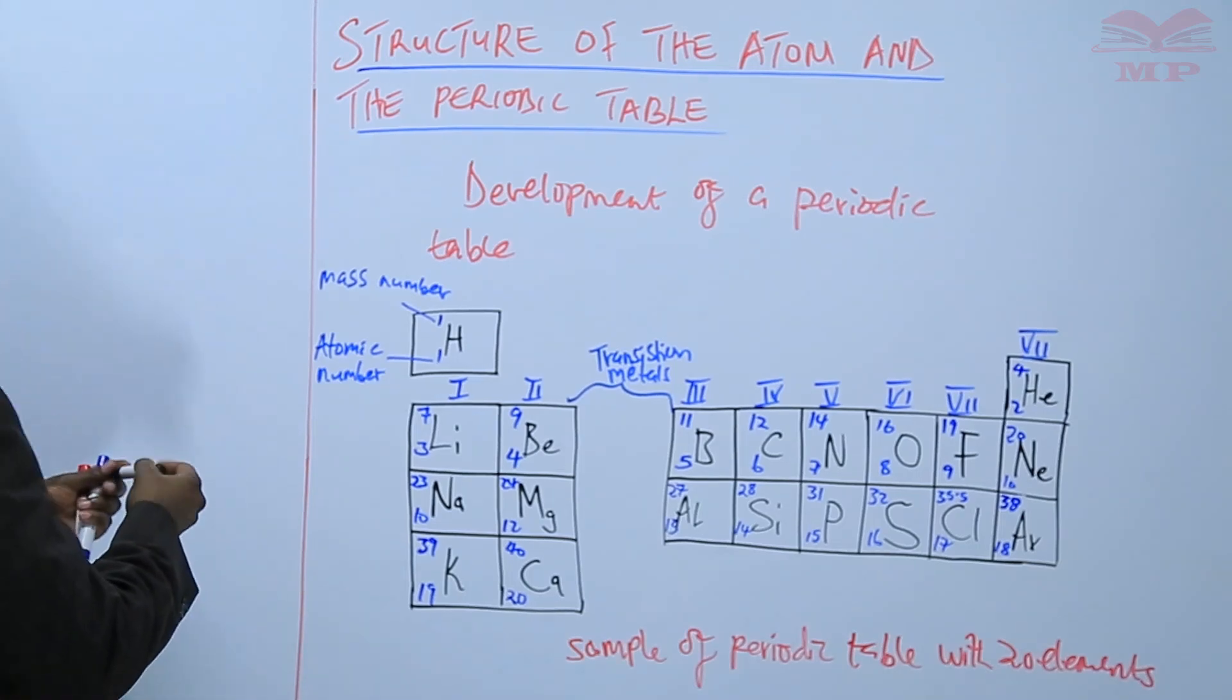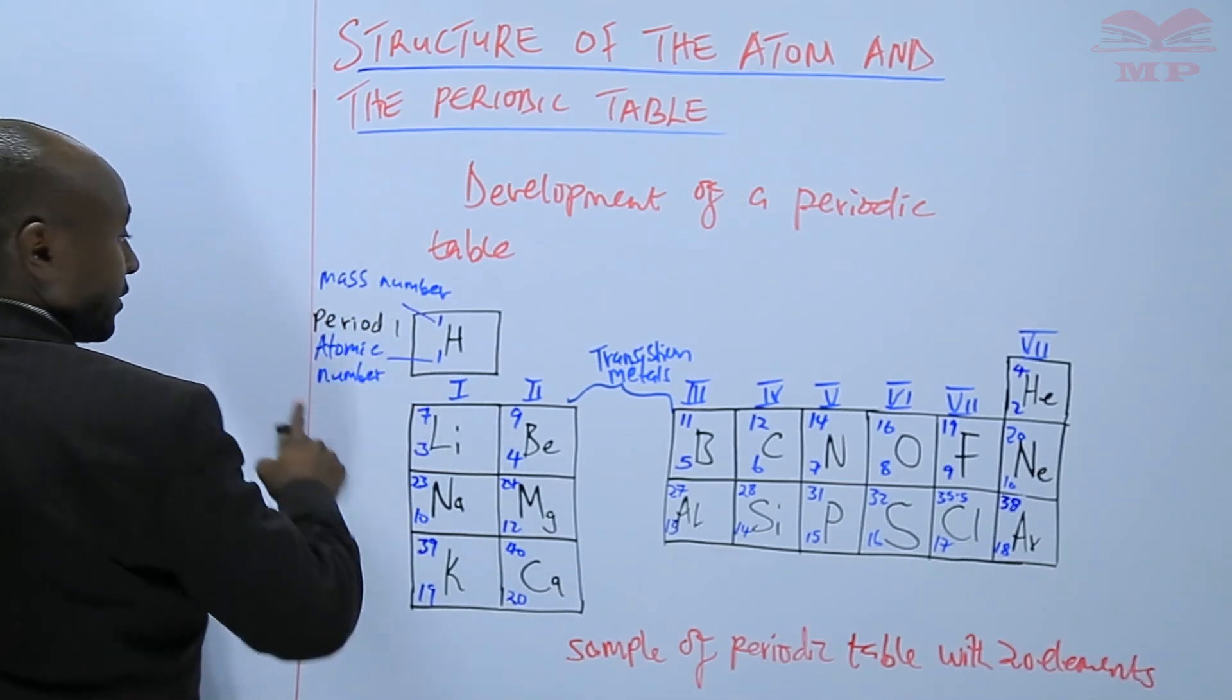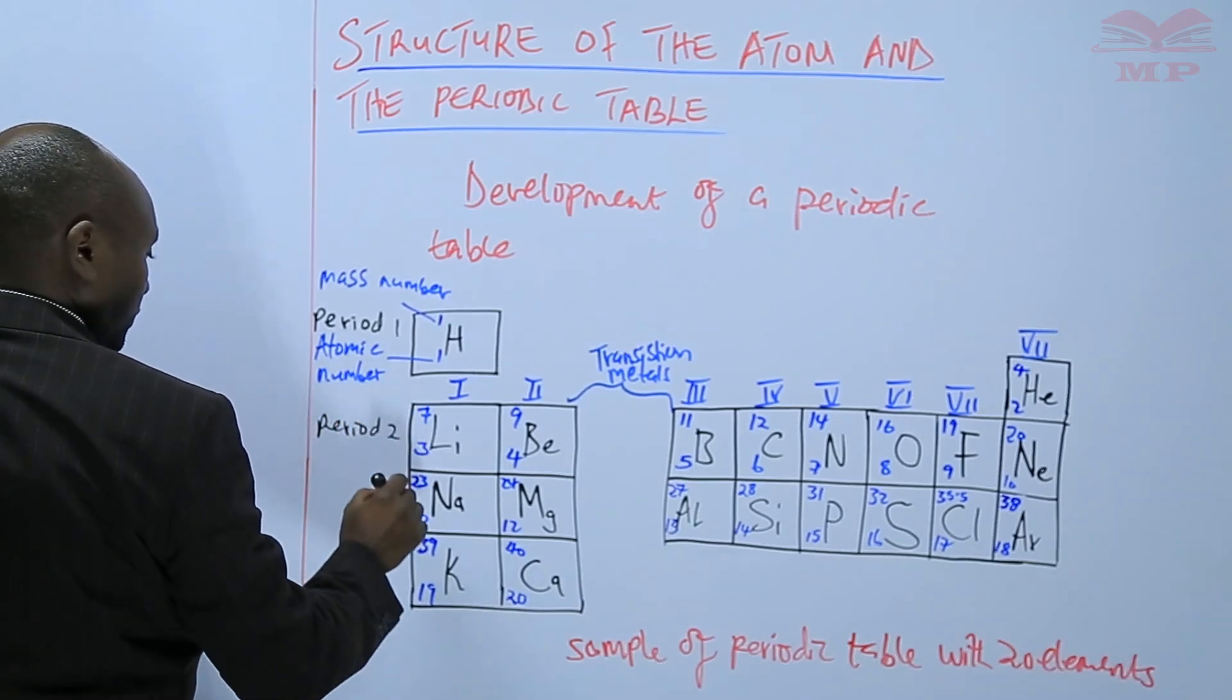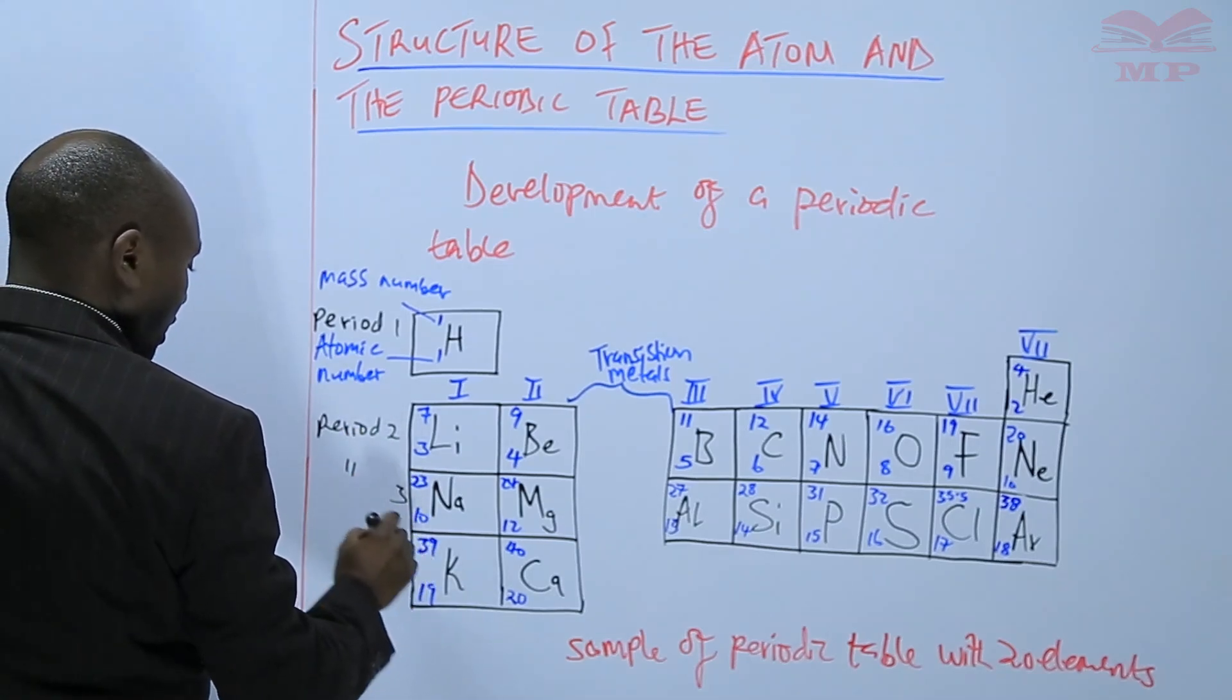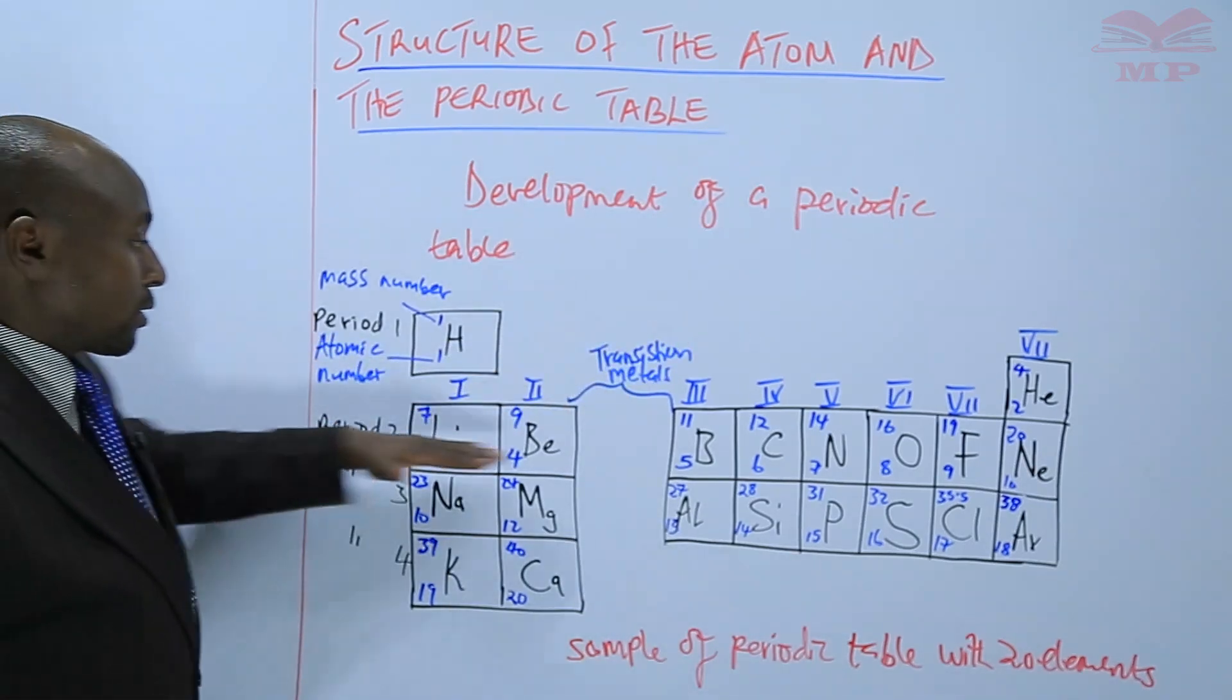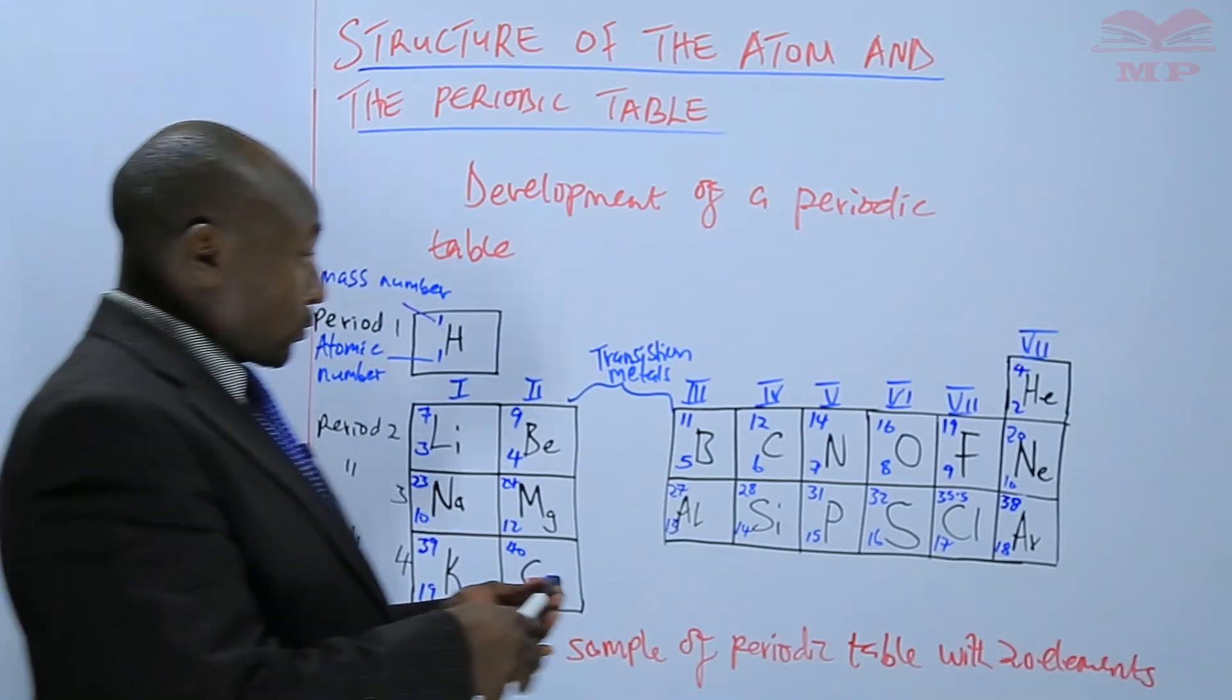Then we have the periods. This is period 1, that row, period 2, 3, and 4. So the periods are the horizontal rows, but the groups are the vertical columns.